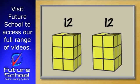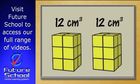If we know each block is one cubic centimeter, and each tower has twelve blocks, what do you think the volume of each tower is? We can say that each of our towers has a volume of twelve cubic centimeters, because each block in the tower is one cubic centimeter.